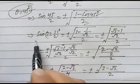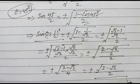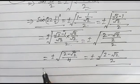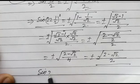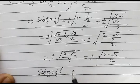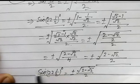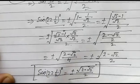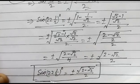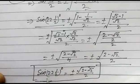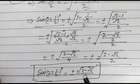So sin 22 and a half degrees will be equal to plus or minus square root of 2 minus square root of 2 over 2. In such a way, we can find out the value of sin 22 and a half degrees, which is equal to plus or minus square root of 2 minus square root of 2 over 2.